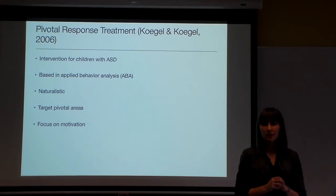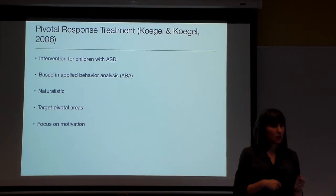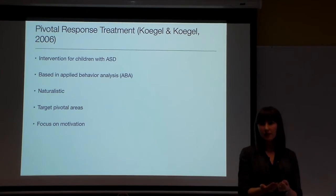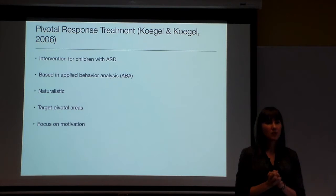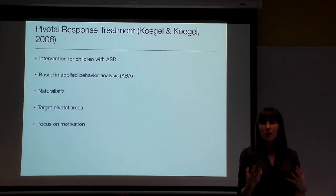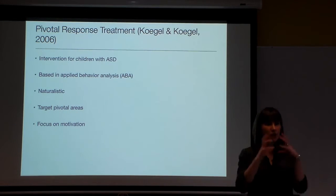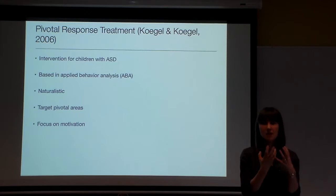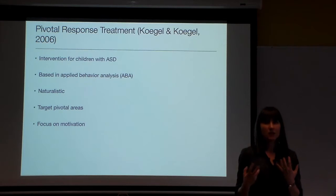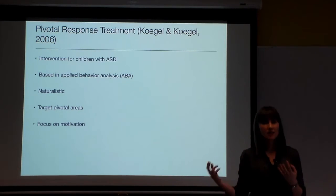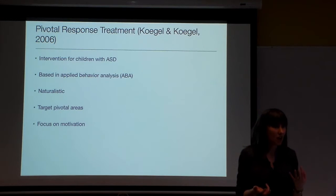I've also worked as a discrete trial clinician, which is more structured — you go through various skills and teach them sequentially. PRT's core target is functional communication. The idea is that if you target functional communication as the primary pivot, other skills will come along in a collateral fashion — so receptive language comes along even though it's not directly taught, and behavior problems tend to decrease even though we didn't explicitly target them.